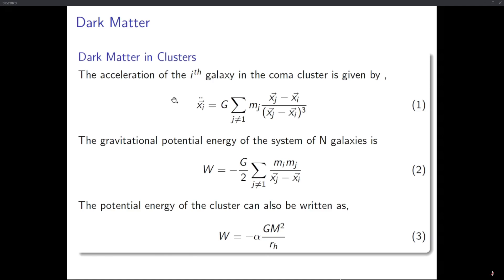As we saw in the previous section, the velocities of stars and other celestial objects almost tend to remain constant, or increase in some cases, as we move away from the center of the galaxy. Now for clusters, instead of taking individual stars into consideration, we take a whole galaxy and try to understand how galaxies interact in a cluster. The first assumption is that the cluster is isolated, so no object outside the cluster can influence it.